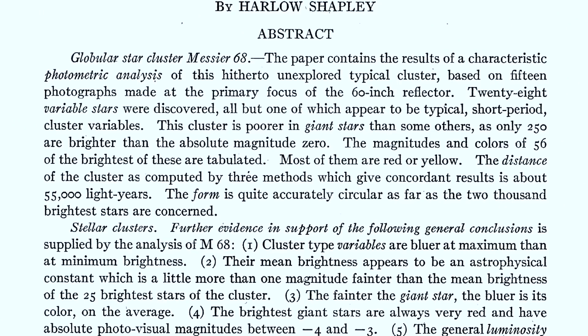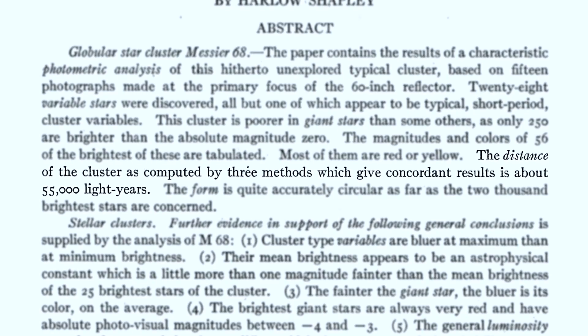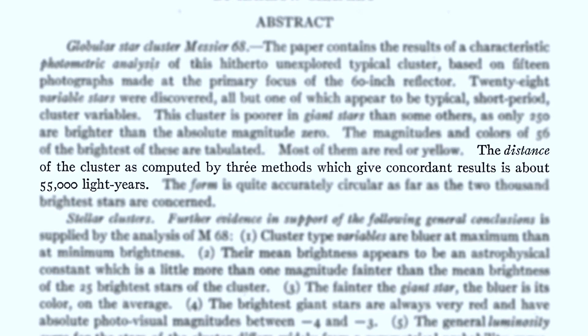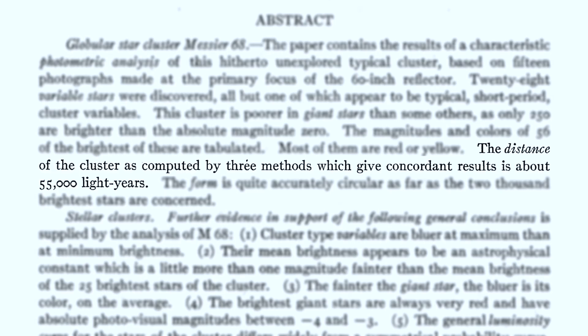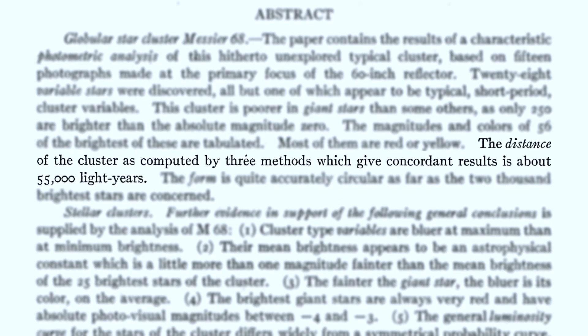So we had three different methods, all essentially measuring the same thing. For this particular case — which may well be why Shapley picked it as his typical example — they all gave more or less the same answer. The answer he ended up with was about 50,000 light years away. A modern analysis puts the cluster at about 34,000–35,000 light years away. So he was in the right ballpark.